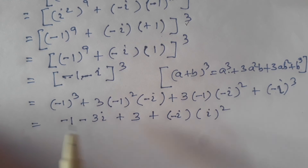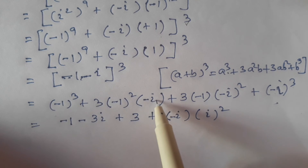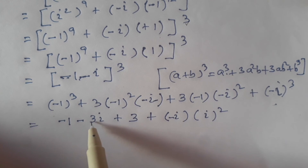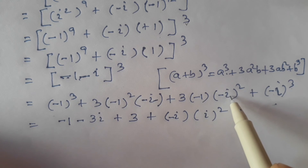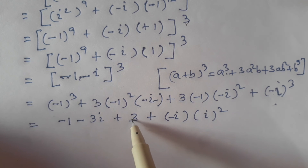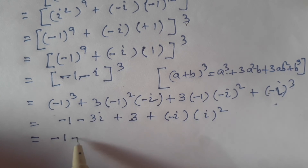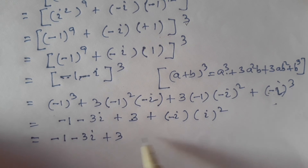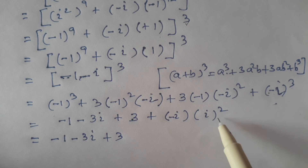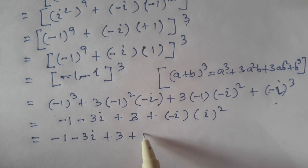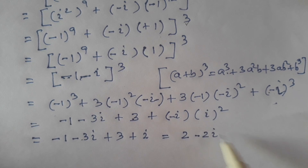So minus 1 cubed equals minus 1. Then 3 times minus 1 squared is 3 times 1, times minus iota gives minus 3 iota. Then minus 3 times minus iota squared: iota squared is minus 1, so minus times minus 1 gives plus 3. Then minus iota cubed: iota cubed equals minus iota times iota squared equals minus iota times minus 1, which gives plus iota. So combining: minus 1 plus 3 gives 2, and minus 3 iota plus iota gives minus 2 iota. The final answer is 2 minus 2 iota.